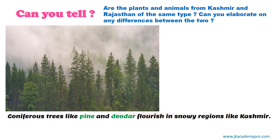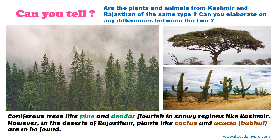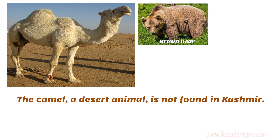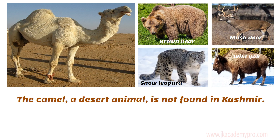We find coniferous trees like pine and deodar flourish in snowy regions like Kashmir. However, in the deserts of Rajasthan, plants like cactus and acacia — that is, babool — are to be found. We know that the camel, a desert animal, is not found in Kashmir. And animals like the brown bear, musk deer, snow leopard, and the wild yak can be found only in cold regions of Kashmir and they cannot live in any other places.